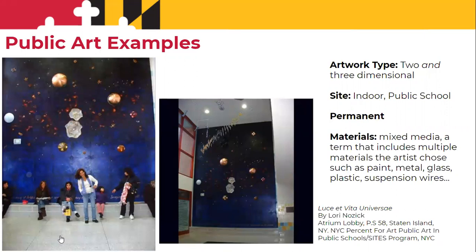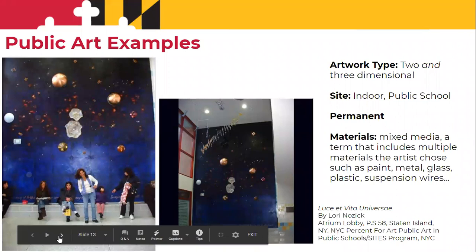This is a combination of both two- and three-dimensional work at an indoor site — a public school in New York City. This is the term mixed media, where an artist has used multiple materials. You can see there's paint, metal, copper illustrating planets and the cosmos, suspended glass, and suspension wires, as you can see from the work out in the hallway for the children and students to enjoy.